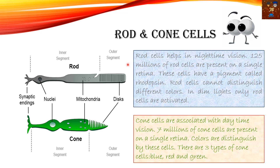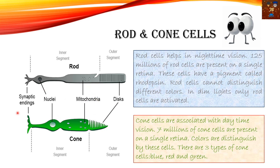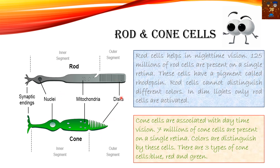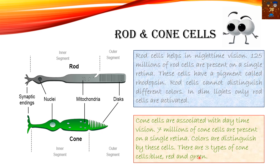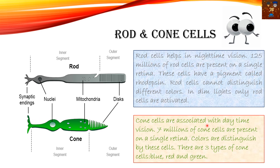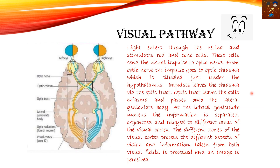Rods and cones are the two very important photoreceptors. Comparing both: they have mitochondria, nuclei, and synaptic endings. They have an inner segment and a disc portion. Rods contain the photopigment rhodopsin. Cones are of three types — blue, red, and green. Rods help in nighttime vision and cones help in daytime vision.